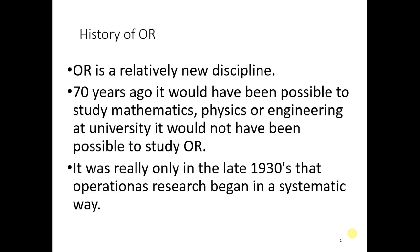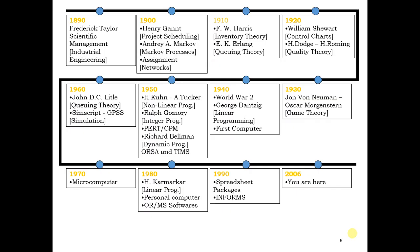The history of operations research starts in the 1930s and has been adopted by many organizations to improve their profits. The Markov process was proposed by Markov in the early 1900s in industrial engineering. In 1950, the Kuhn-Tucker condition for non-linear programming was invented, and the PERT/CPM model was proposed, which significantly reduced project costs and was used during World War 2 in the 1940s.